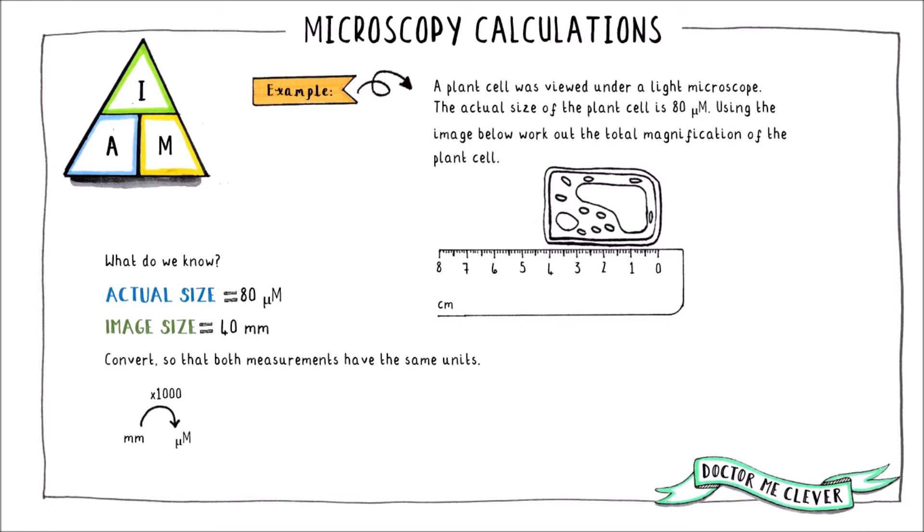I like to work in micrometres here so let's change the image size into micrometres. To do this we times by 1000 because there are 1000 micrometres in one millimetre. This gives us 40,000 micrometres.